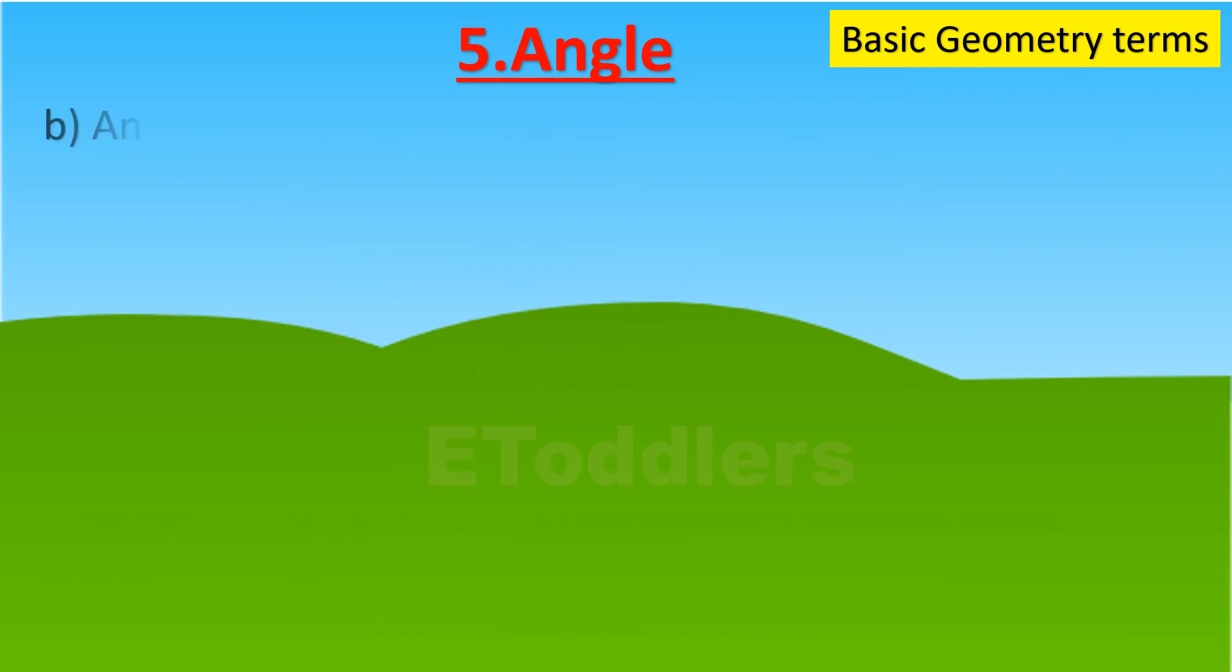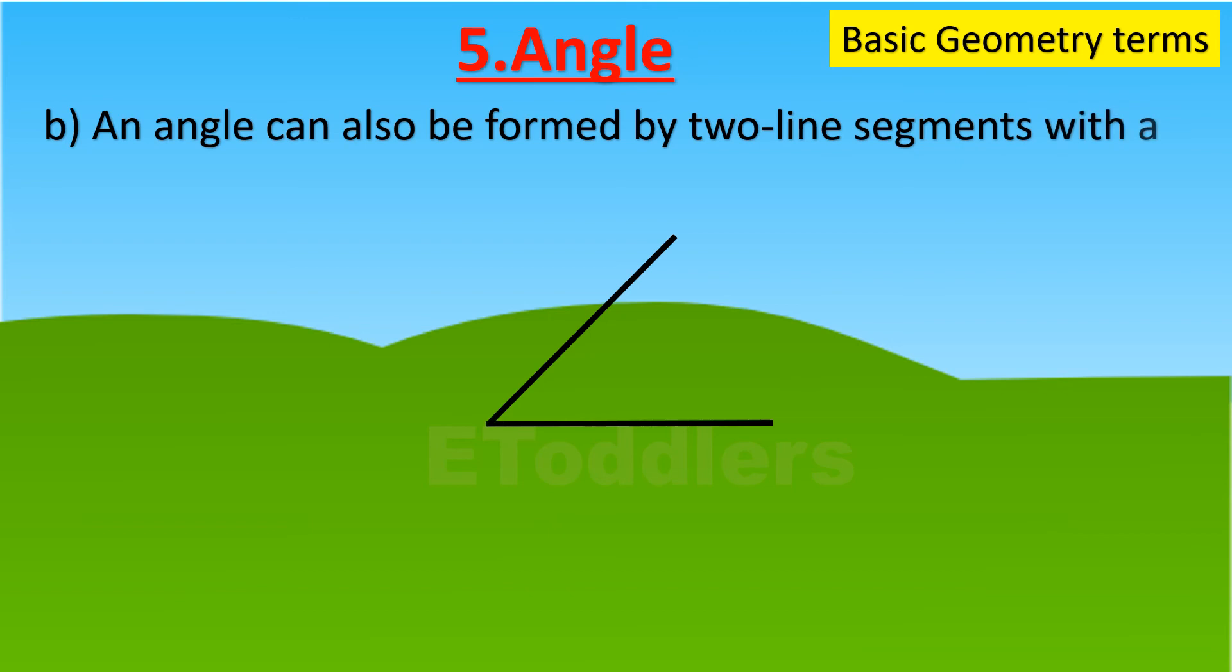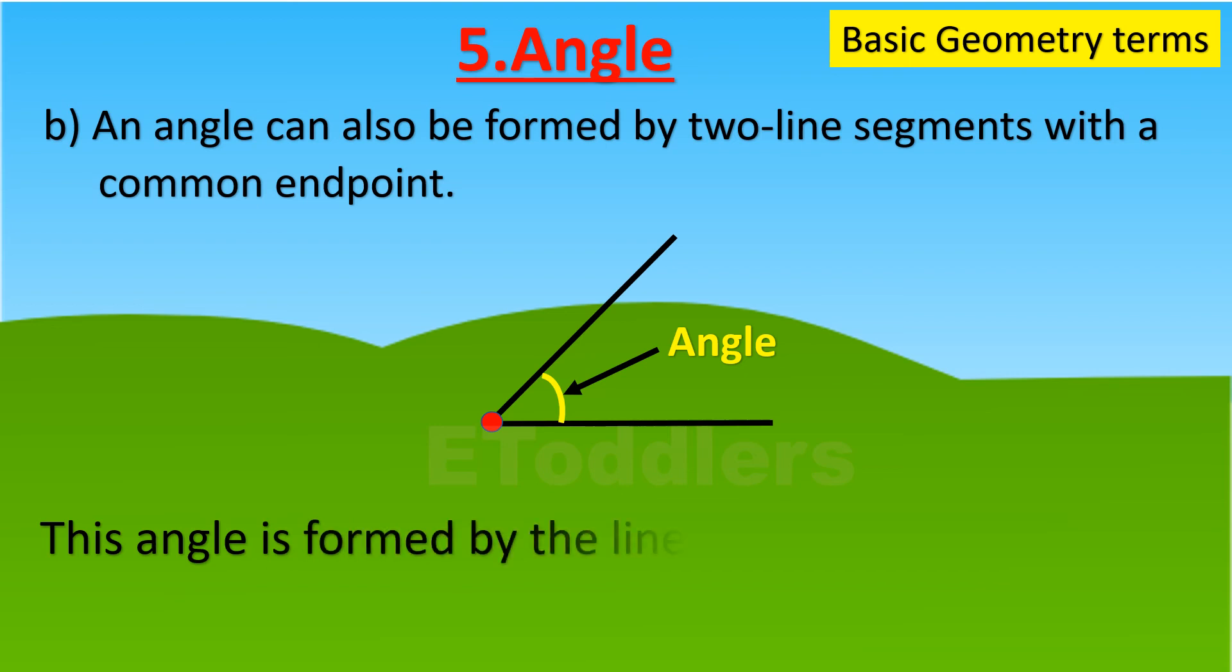An angle can also be formed by two line segments with a common endpoint. This angle is formed by the line segments XY and XZ. The common endpoint is X.